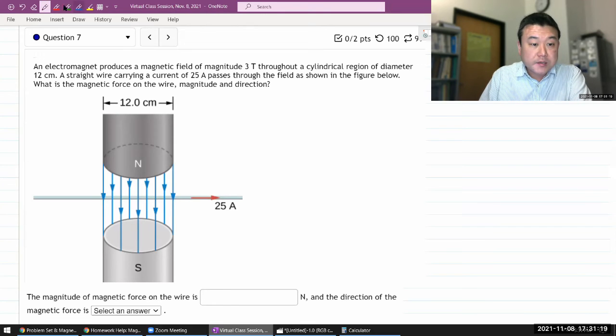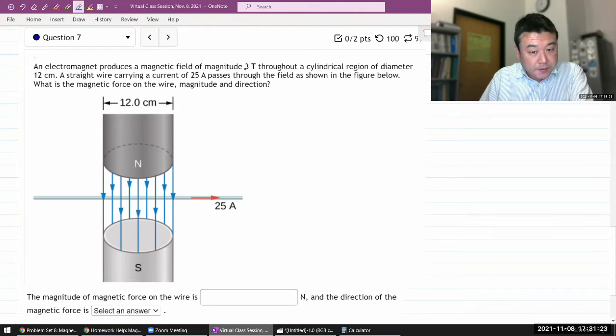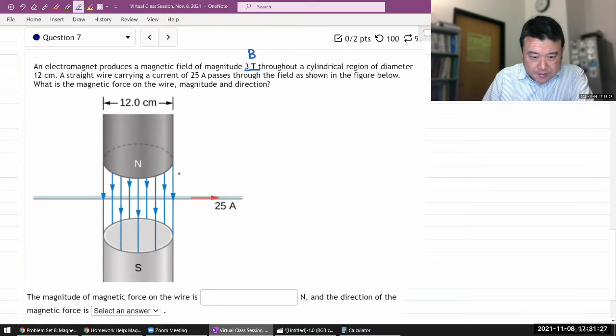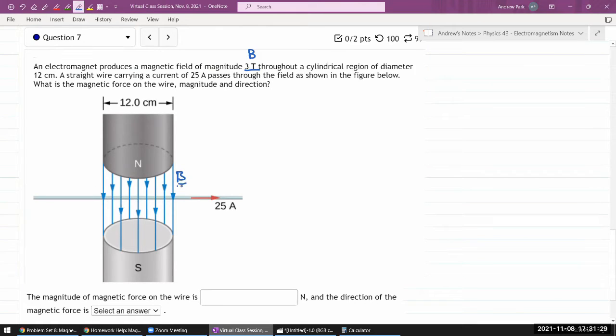So this is what the question says. It says an electromagnet produces some magnetic field of given magnitude. So this represents the magnetic field, that's our B that's given throughout a cylindrical region of the diameter. We are being told what the distance from one end to the other end of the cylinder is. Let me call that D.